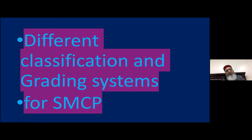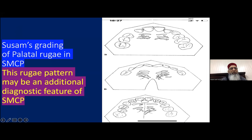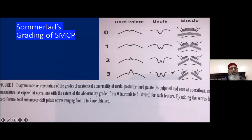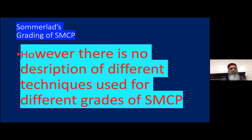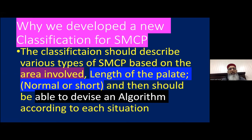There have been different classification and grading systems for submucous cleft palate. Susan's grading describes the rugae pattern as an additional diagnostic feature. Professor Brian Sommerlad described grading from 0 to 3 based on bifid uvula, notch in the hard palate, and muscle separation — but there is no description of different techniques for different grades. This is why we developed a new classification: it should describe various types based on the area involved, palate length, and allow us to devise an algorithm for each situation.